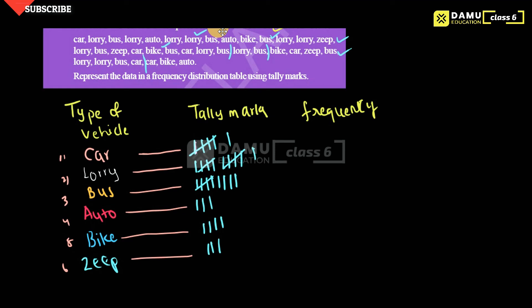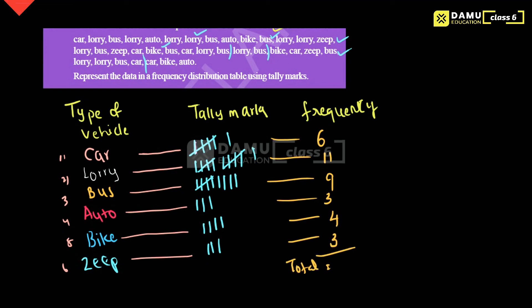So how many times does each vehicle get repeated? The frequencies are: car — 6, lorry — 11, bus — 9, auto — 3, bike — 4, jeep — 3. If you add all these: 9 plus 11 is 20, then 6 plus 4 is 10, then 3 plus 3 is 6. So 20 plus 10 plus 6 equals 36 vehicles total.